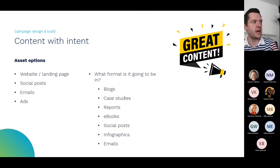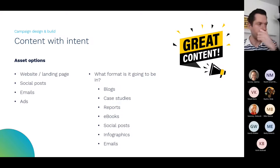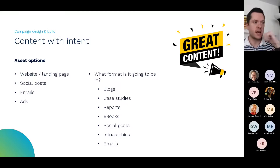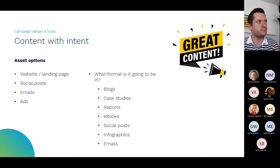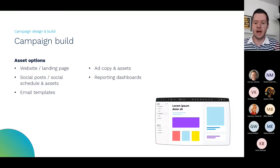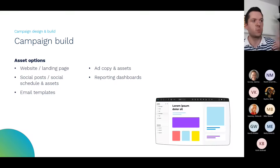Coming back to content with intent — there are various different options, but it's about deciding what we're going to do and what format we're going to do it in. We can quite easily take one headline piece of content and slice it and dice it for a range of different things. We could create a business presentation about Microsoft 365 Business Premium and then slice that into blogs, case studies, social posts, and infographics. Campaign build is creating the physical social posts or social schedule, testing the landing page, designing your ad copy and assets, creating your reporting dashboard, and email templates. If you're using automation, this comes into this stage as well.